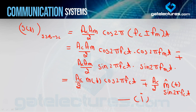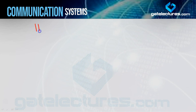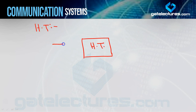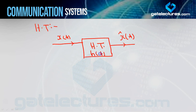Pehle hum m̂(t) ka analysis karenge jo SSB-SC ke main equation mein create hua hai. Hilbert transformer is just like a system. Agar input diya x(t), toh output aata hai x̂(t) — jo x(t) ka 90 degree phase shifted version hai. For example, agar input cos diya, toh output sin hoga; agar input sin diya, toh output cos hoga — after passing through Hilbert transform.